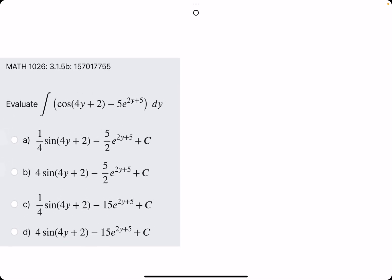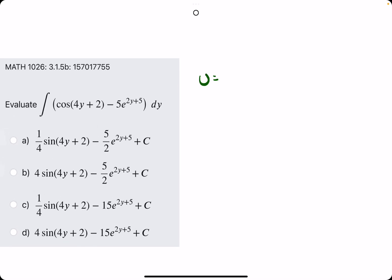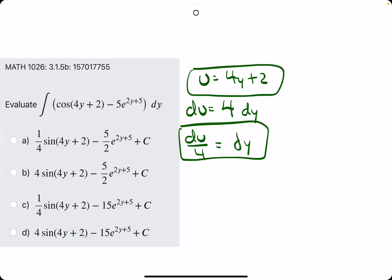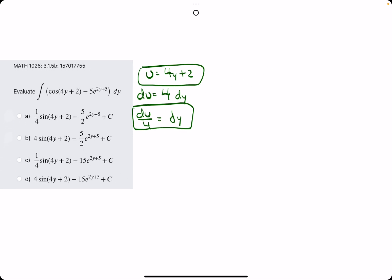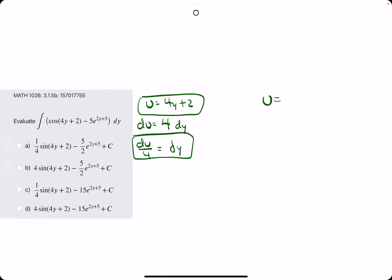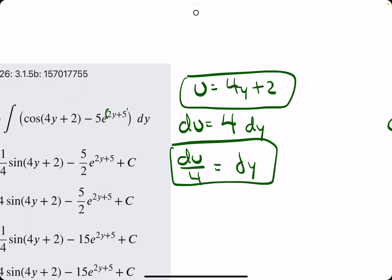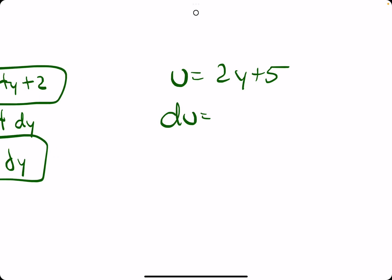Starting with cosine. Let's see if I can do it without rewriting a bunch of integrals and things like that. So we'll have the first u will be 4y plus 2. Du will be the derivative 4. And then we'll tack on dy. Du over 4 equals dy. So then, let's go ahead and do the second u simultaneously if we can. And then we'll use them both eventually. So the second u is the exponent of e. So 2y plus 5. Derivative is 2. Tack on dy. Solve for dy. Du over 2.